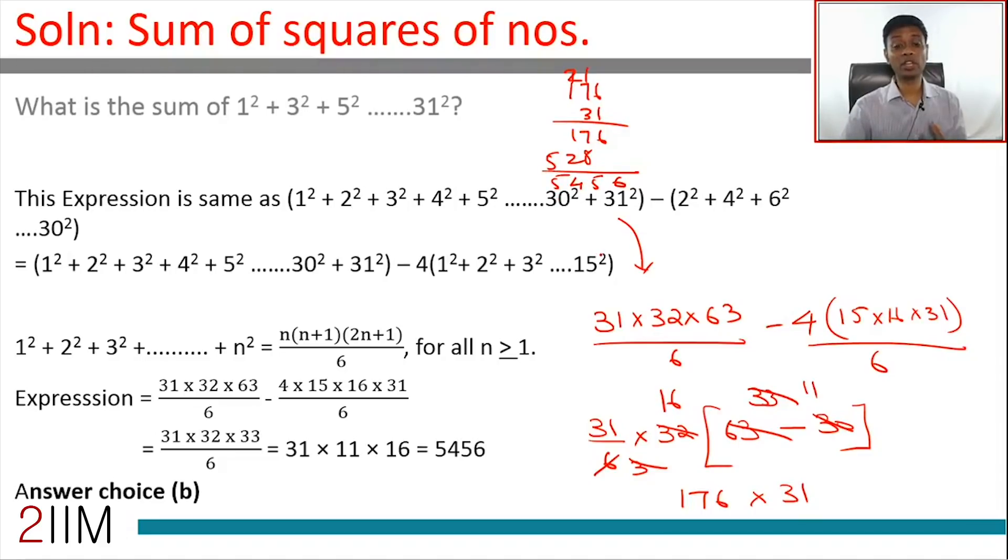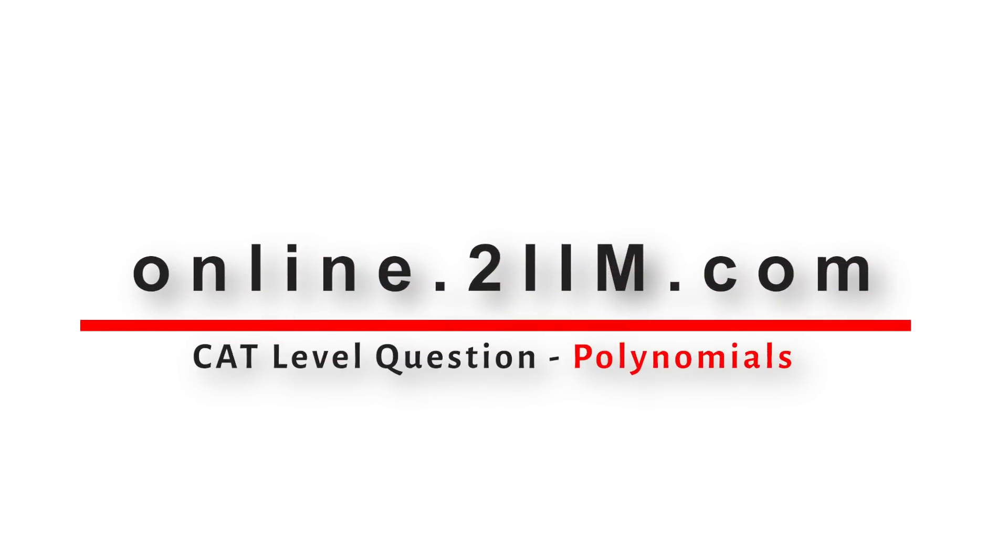5456, which happens to be choice B. Not rocket science, so the answer is choice B.